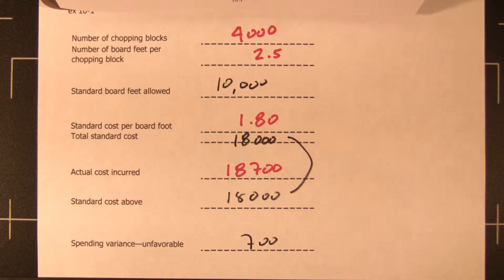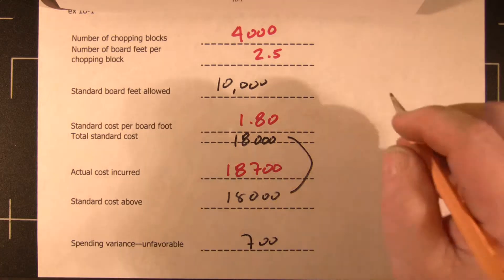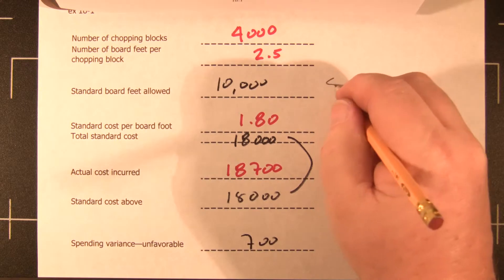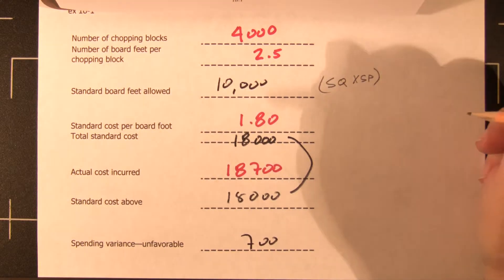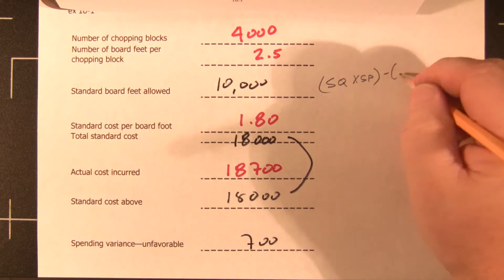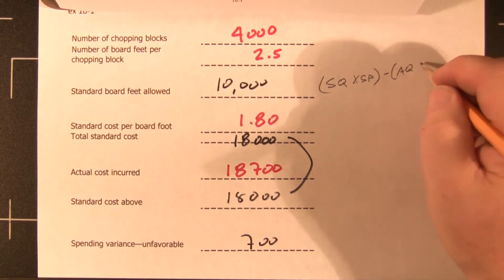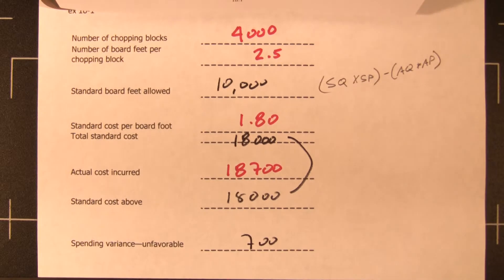So we're going to do the actual quantity times the actual input, and we're going to look at the actual output and compare it to the standard quantity. So we're going to take a look at the standard quantity times standard price, and we're going to compare that to the actual quantity at the actual price. So that will give us our material quantity variance.